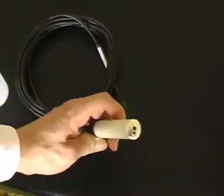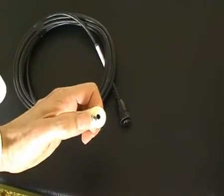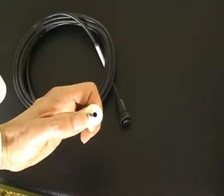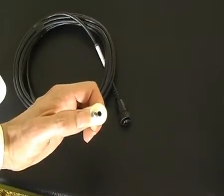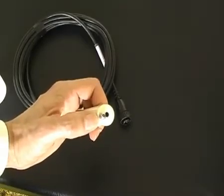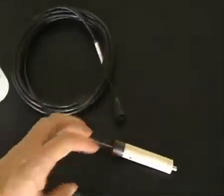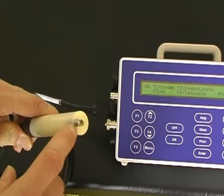Note that the conductivity sensor has an in-built temperature sensor, that stainless steel rod. It is not only temperature, it is also ATC, Automatic Temperature Correction, which corrects conductivity readings to 25 degrees Celsius. It must also be used for temperature correction of pH measurements as well. It is factory calibrated and only needs to be checked periodically, perhaps once a year.